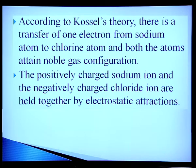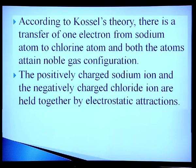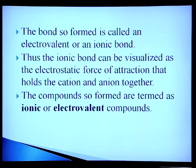If you take the example of sodium chloride, according to Kossel theory, there is a transfer of one electron from the sodium atom to the chlorine atom and both atoms attain noble gas configuration. The positively charged sodium ion and negatively charged chloride ion are held together by electrostatic attraction. The bond so formed is called an electrovalent or ionic bond. The ionic bond can be visualized as the electrostatic force of attraction that holds the cation and anion together. Such compounds are termed ionic or electrovalent compounds.